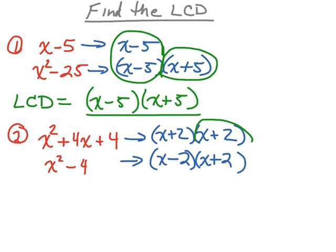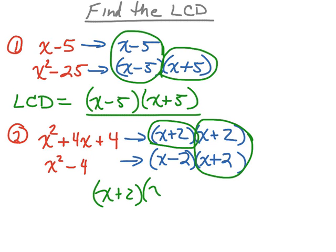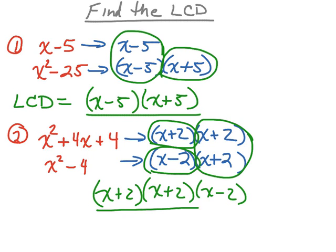You'll notice that we have some common factors here, so that x plus 2 is going to be part of my least common denominator. However, these two remaining factors are not in common, but we do need to use them as part of the least common denominator. So that x plus 2 is one factor, and this x minus 2 would also be part of my least common denominator. All three of these factors make up my least common denominator.